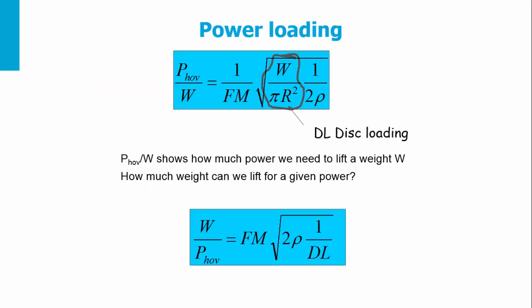Therefore, the power to hover equals 1/FM multiplied by ideal power. As the figure of merit decreases, the power increases. The figure of merit is 1 in an ideal rotor with no blade drag.